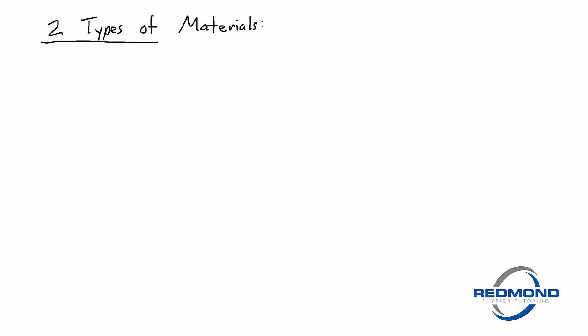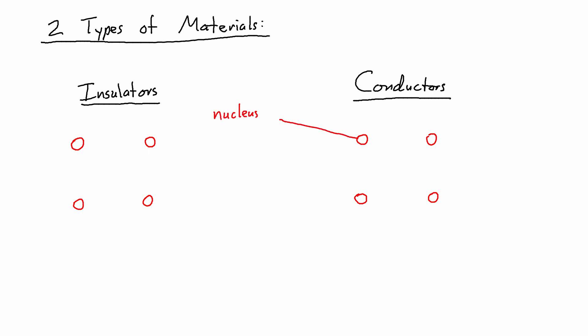The next key idea is that there are two different types of materials: insulators and conductors. Both types start with atoms of roughly the same structure. I'm imagining I have a piece of each as I'm drawing this, just four atoms, so it's an incredibly small piece.